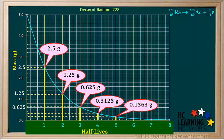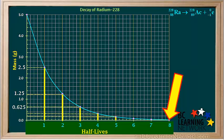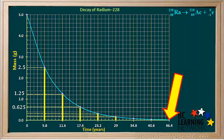We can change the x-axis to half-lives instead of years, and now we can clearly see that every time another half-life passes by, the mass of the parent isotope drops by one half. By the time eight half-lives have passed, very little of the original radium-228 will remain in the sample. If we change the scale to years again, we can see that eight half-lives of this isotope is equal to 46.4 years. We could make a similar graph for every different isotope — the shape would be the same, but because each isotope has its own half-life and the starting amount could be different, the numbers on the graph would be different.